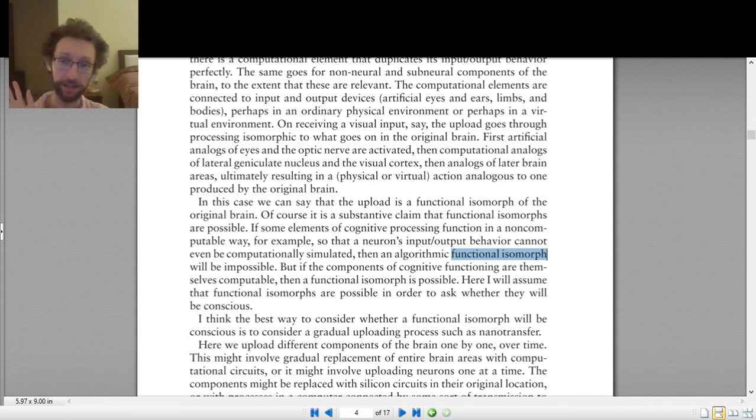I'm not sure he explains it perfectly well, so I thought I'd explain it. A functional isomorph—we get into talking about it because Chalmers is interested in the functions of the mind. What are the functions of the mind? What are the functions of consciousness? What does consciousness do?